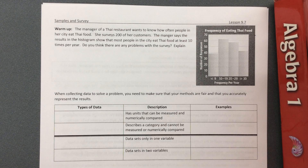Hey guys, so this is section 9.7. This will be our last lesson for this chapter. We're going to do samples and surveys today — it's a lot of vocab. If you can print this off, I would do that. It should be in Google Classroom. We'll do some vocab and then work with it, and that'll be it today.